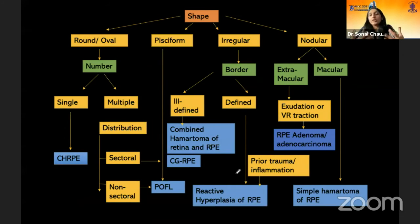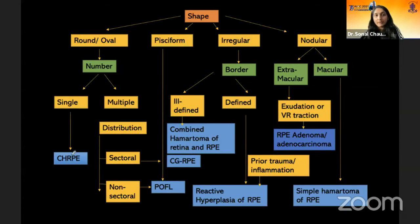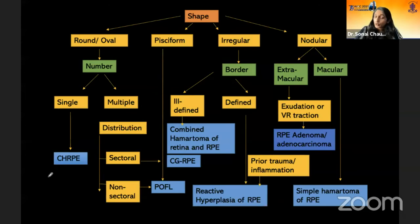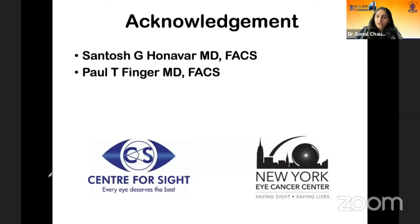In summary, a chart shows the varied differential diagnoses of black retinal lesions: important among them are the diagnosis and monitoring of congenital hypertrophy of retinal pigment epithelium, the diagnostic features of RPE adenoma and adenocarcinoma, and the optic nerve head melanocytoma. Acknowledgments to mentors who helped gain all this knowledge about ocular oncology.